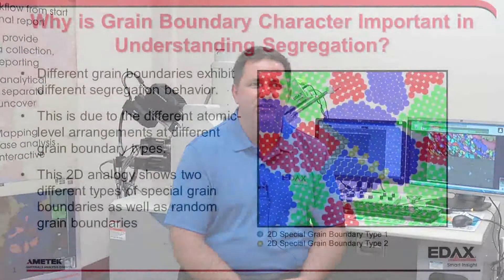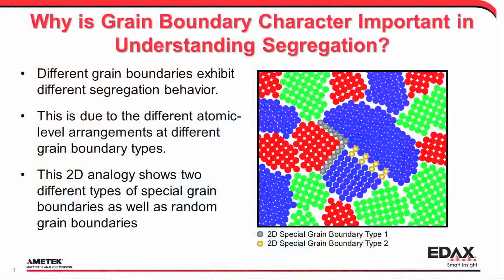Atom Probe Assist provides an innovative means of detecting and monitoring the position of grain boundaries while preparing specimens for atom probe tomography analysis. This materials analysis technique provides 3D chemical composition and imaging at the atomic scale and is uniquely suited to the analysis of grain boundary segregation.